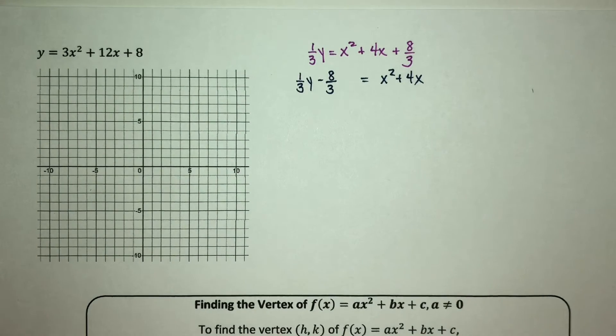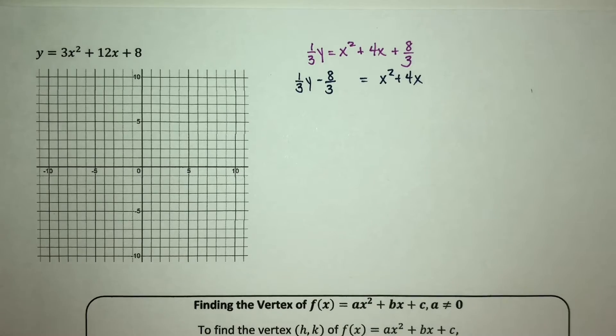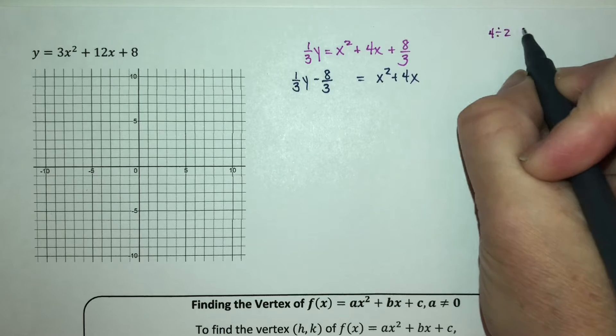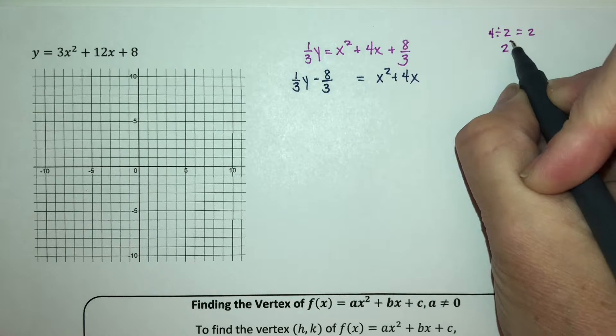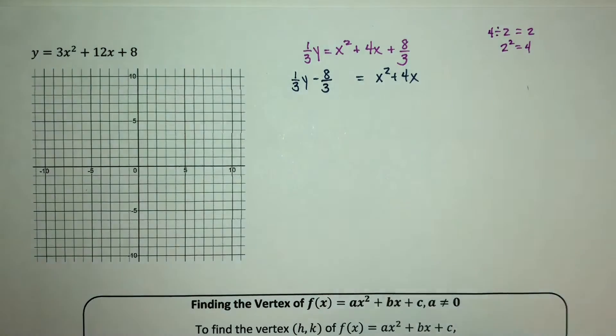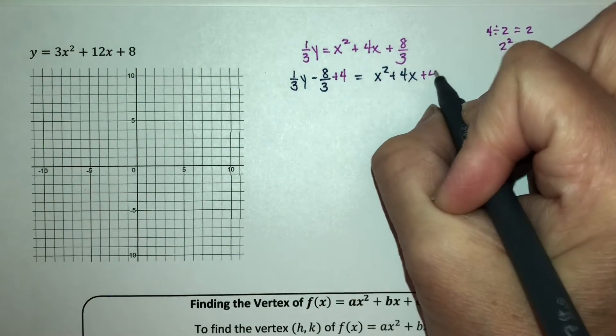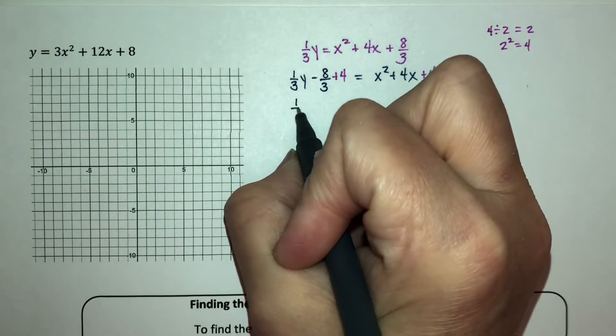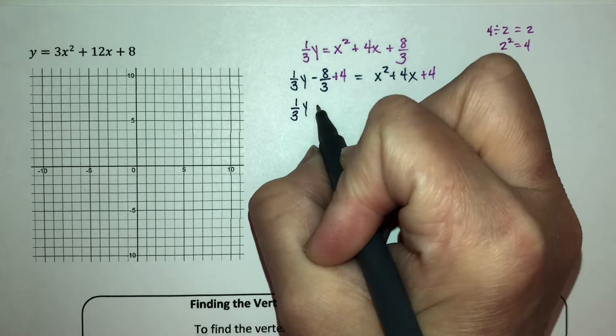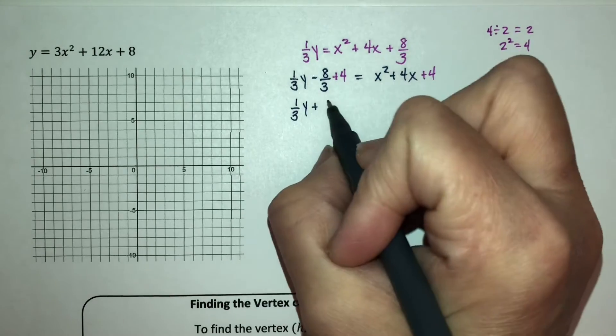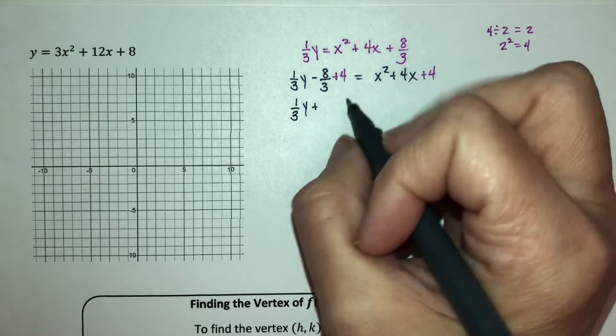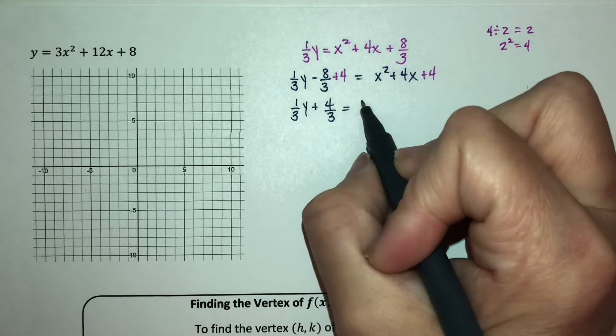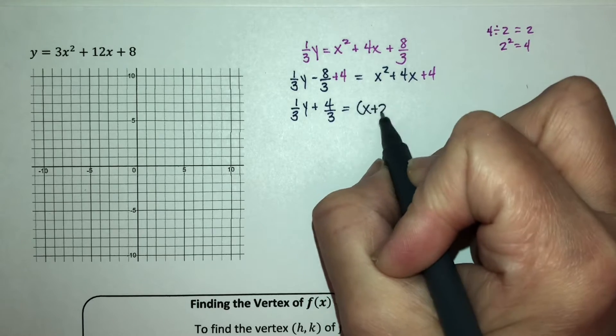Okay. Now I take the number in front of my x, which is 4, divide it by 2 to get a 2, and then take that 2 and square it to get a 4. So I'm going to add 4 to both sides of this equation. I have 1/3 y, that ends up being 4/3 plus 4/3. When you add those, this is a perfect square trinomial that factors as (x + 2)².